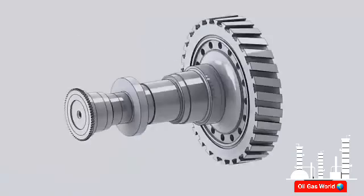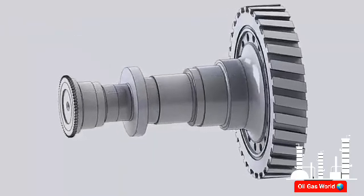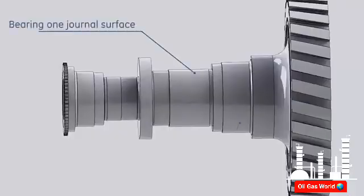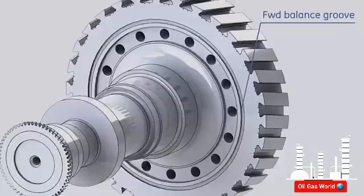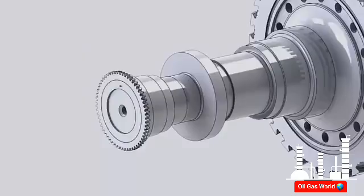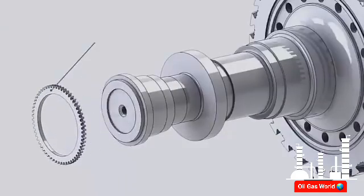The forward stub shaft is machined to provide the following features: a thrust collar, which carries the axial downstream and upstream thrust forces to prevent rotor axial movements; a journal surface for bearing number one and surfaces for oil and air seals; a forward balancing groove to add balancing weights for vibration control; and a forward flange to connect the gas turbine shaft to the auxiliary gearbox. A speed ring with 60 teeth is attached to the forward flange for speed measurements and protection.